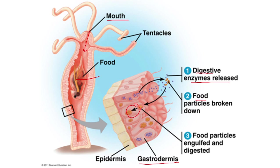This type of digestive system is called a sac-like digestive system, which has a common opening. An important MCQ point: hydra possesses a sac-like digestive system because it contains a single opening for both ingestion and ejection. I hope you understand everything about the ingestion and digestion in hydra.